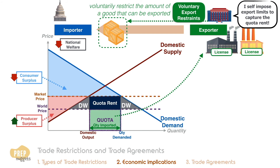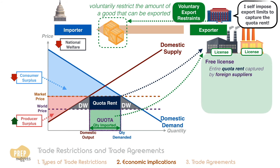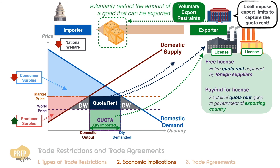If the licenses are free, the entire quota rent is captured by foreign suppliers. Otherwise, part or all of it goes to the government of the exporting country.